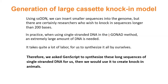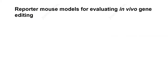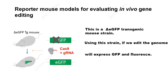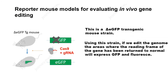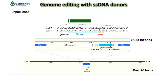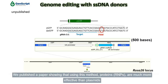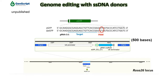It takes quite a lot of labor to synthesize it all by ourselves. Therefore, we ask GenScribe to synthesize these long sequences of single-stranded DNA for us, then we use it to create knock-in animals. This is a Delta E GFP transgenic mouse strain. Using this strain, if we edit the genome, the areas where the reading frame of the gene has been returned to normal will express GFP and fluoresce. We published a paper showing that using this method, RNPs are much more effective than plasmids at introducing DNA into liver cells.